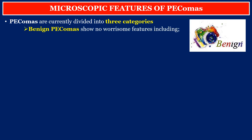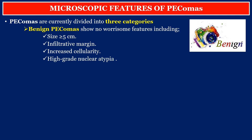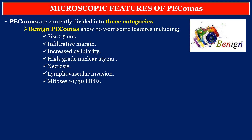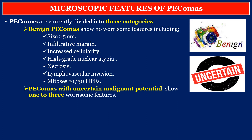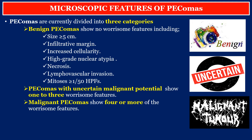PEComas are currently divided into three categories. Benign PEComas show none of the worrisome features, including: size equal to or more than five centimeters, infiltrative margin, increased cellularity, high-grade nuclear atypia, necrosis, lymphovascular invasion, and mitosis equal to or more than one per 50 high-power fields. PEComas with uncertain malignant potential show one to three worrisome features. Malignant PEComas show four or more worrisome features.